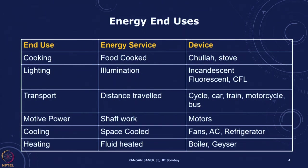In factories, we have a large number of motors used to create shaft work — the device is the motor. For cooling, we are looking at space cooling: we have fans, ceiling fans, air conditioners, and refrigerators. In industrial processes, we have heating where fluid is being heated — the devices are boilers or geysers. In each of these cases, we can look at what is the energy input, what is the output, what is the energy service, and do this kind of analysis.